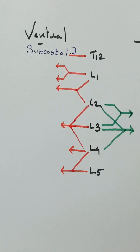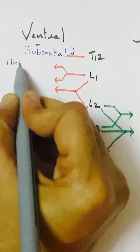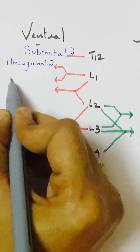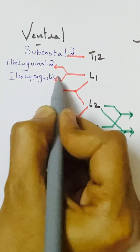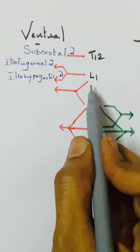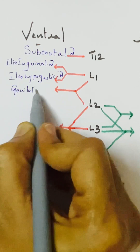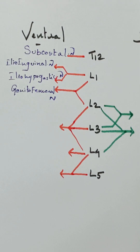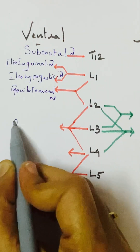From T12 it is the subcostal nerve. From L1 we have ilioinguinal and iliohypogastric nerve — the root value of both is L1. Then L1 and L2 join to form the genitofemoral nerve, which has a genital component and a femoral component. From L2, L3, and L4 on the ventral side there is a branch.